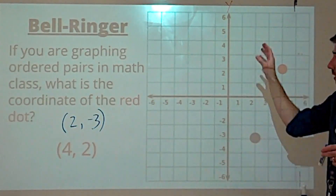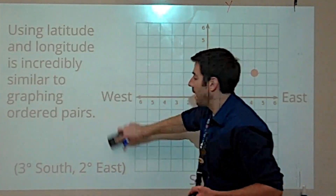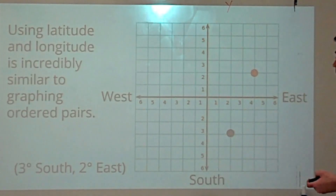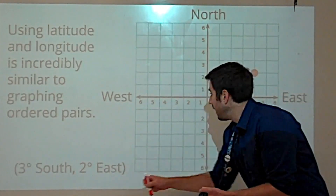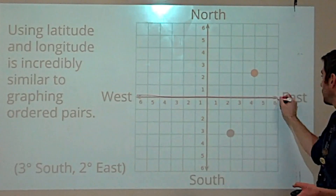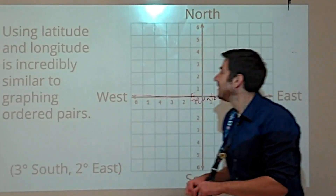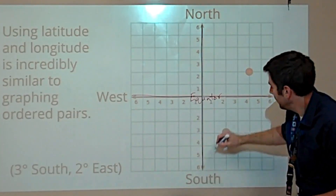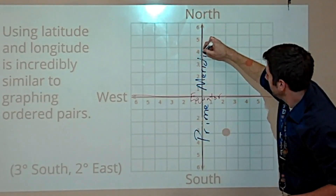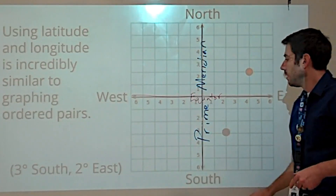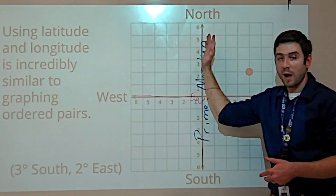This whole concept of graphing ordered pairs is perfectly in line with graphing latitude and longitude. Except instead of a y-axis and an x-axis, think of it as the x-axis is the equator. The y-axis is the prime meridian. So when you're graphing, the x is the equator, the y is the prime meridian.